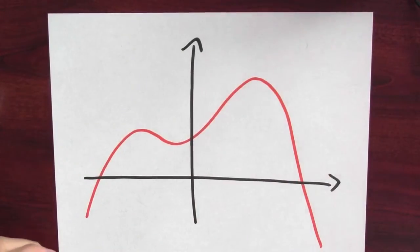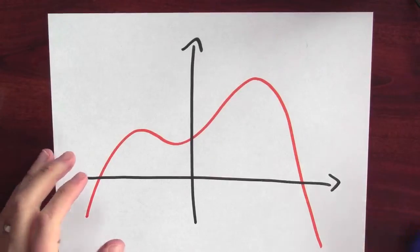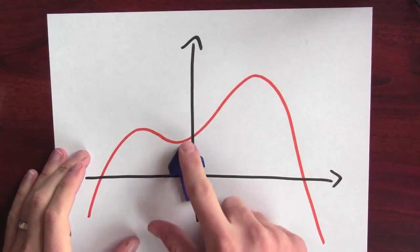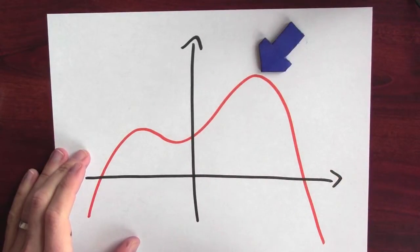Here's a graph of some random function I just made up. A significant qualitative feature of this graph is that right here is a valley in the graph, and up here is a mountain top.